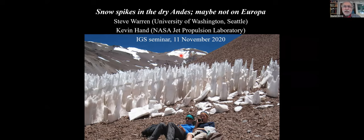The title is 'Snow Spikes in the Dry Andes, but Maybe Not on Europa.' I'm going to talk about the snow spikes you see in these pictures, and then we'll consider whether similar structures could occur on Jupiter's moon Europa, as has recently been claimed. When we get to that part of the presentation, I'll turn it over to Kevin Hand, who's an expert on Europa.